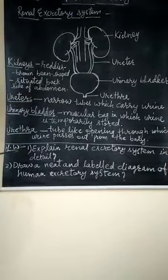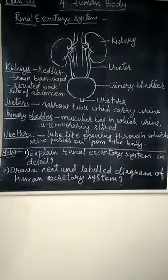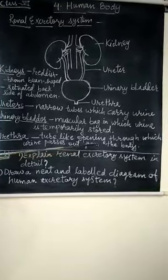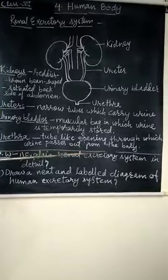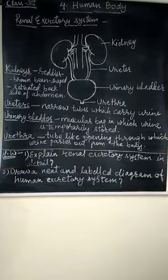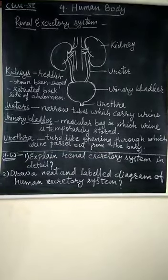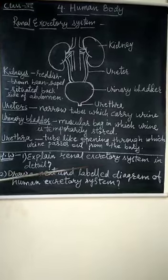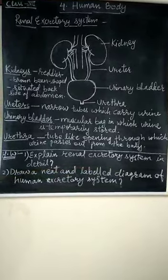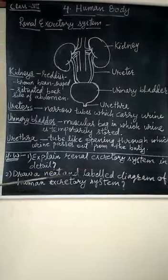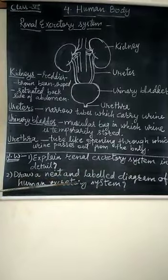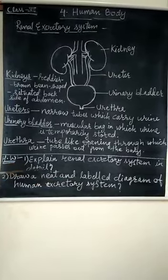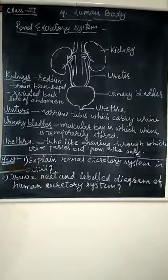Now for today's homework. Question number 1: Explain the renal excretory system in detail. Question number 2: Draw a neat and labelled diagram of the human excretory system. Write the answers to both questions in your classwork biology notebook.